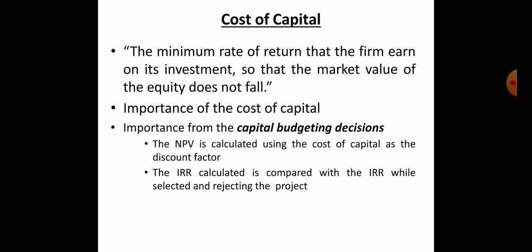There are four major sources of finance: number one is equity share capital, number two is preference share capital, number three is debt — that is debentures or bonds — and number four is retained earnings, which is the internal source of finance. The cost of capital is the minimum rate of return that the firm earns on its investment so that the market value of equity does not fall.